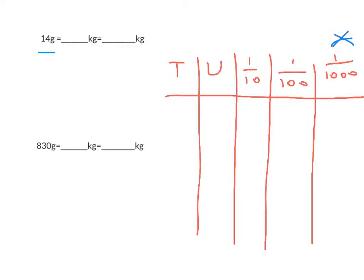So for 14 grams, I'm going to use my notation board and put in my 14 like this. I need a zero as a placeholder. There's where my decimal point would be. There's where my unit would be.